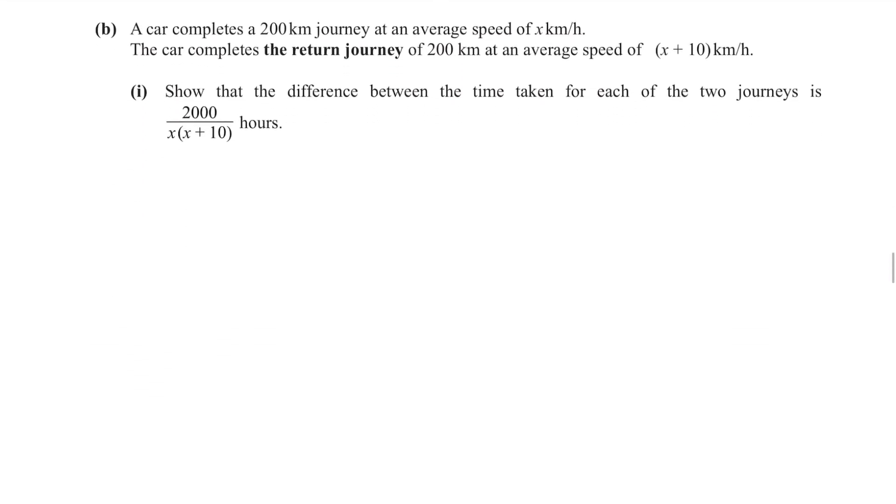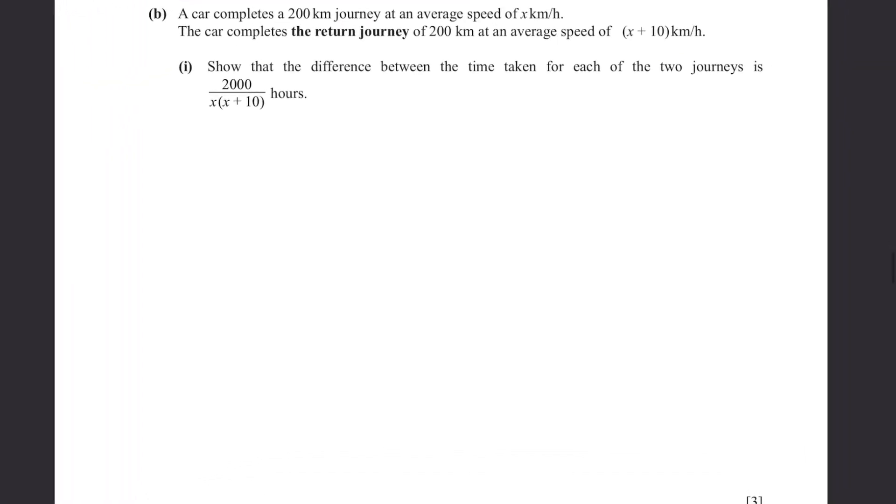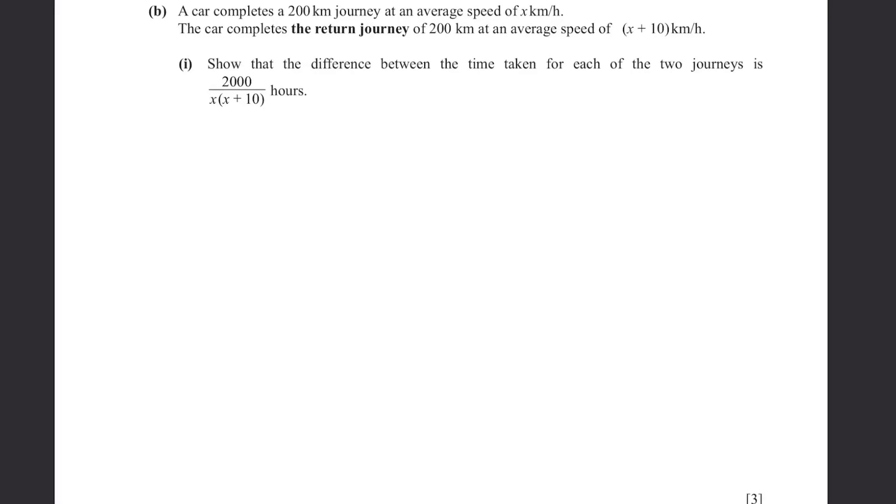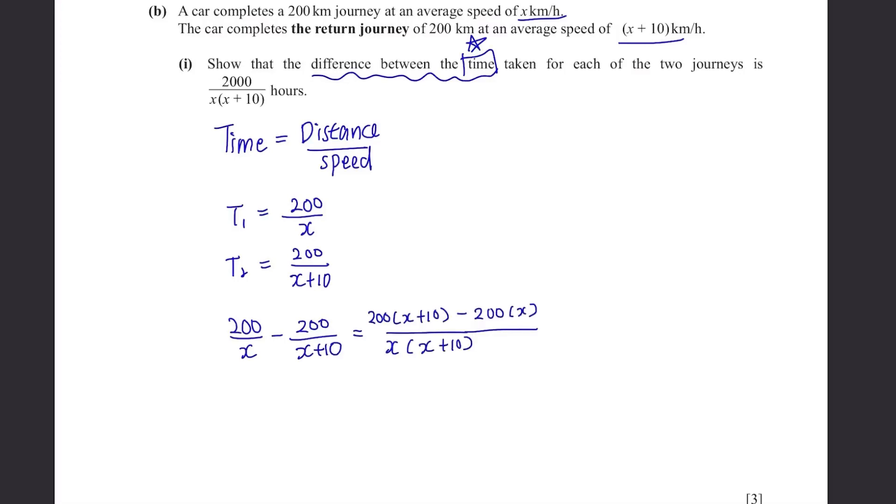Part B. A car completes a 200 km journey at an average speed of x km per hour. The car completes the return journey of 200 km at an average speed of x plus 10 km per hour. Show that the difference between the time taken for each of the two journeys is 2000 over x times x plus 10. You need to find the difference between the time taken and the time is not given here. So calculate that. Time equals to distance divided by speed. 200 divided by x for the first one and 200 divided by x plus 10 for the next. The difference is, well, minus them. Try to subtract it by multiplying the denominator. Simplify it and ta-da, you got it.